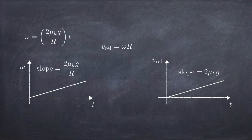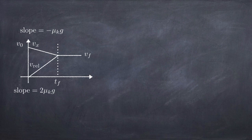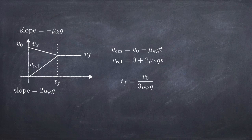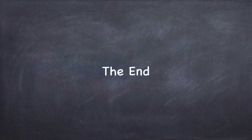Now we plot both graphs together: the speed of the center of mass is decreasing with time, and the speed of a point on the rim relative to the center of mass is increasing with time. When those two are equal, the wheel stops sliding — the condition for non-sliding rolling motion is met. Setting the two expressions equal and solving gives the time at which this occurs. Plugging that time back into the speed formula gives the final speed as two-thirds of the initial speed v₀.